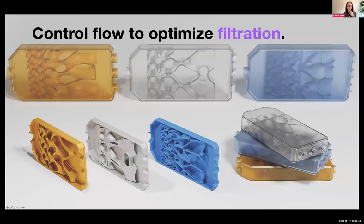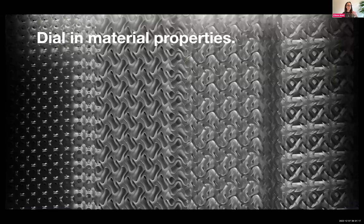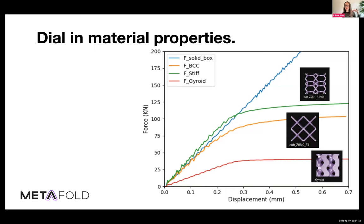We can also control flow using these different shapes with fluid flow, which has all kinds of different applications. In some cases, we want to maximize texture to maximize adhesion — this is the case in a lot of implants where you're looking for bone growth and trying to create a lot of surface area for bone to grow on. A whole separate concept is that we can really dial in the material properties. We can take these different lattice structures and use them strategically to get different material behaviors. Here are some examples of different beam lattices — each is going to have different performance under compression — and we can tune our prints to have the material behaviors we want. A lot of people are using this in orthotics or other places where you have compressive forces.